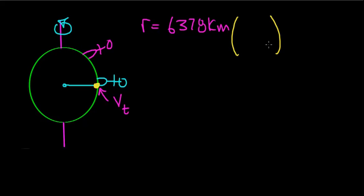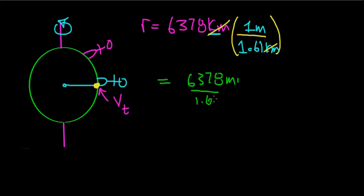First, we need to multiply this distance by a conversion factor to convert to miles. There are 1.61 kilometers in every mile. When you do this conversion, the kilometers cancel out, and you get 6,378 divided by 1.61, which equals about 3,961 miles.